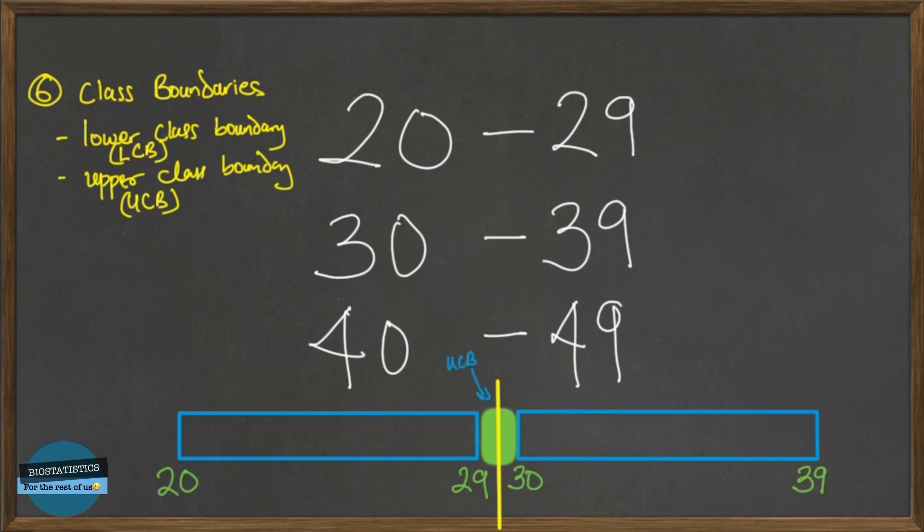So the simplest way to do this is just to add both numbers together, 29 plus 30 and we'll have 29.5. So that point is the 29.5 point and that's the class boundary.